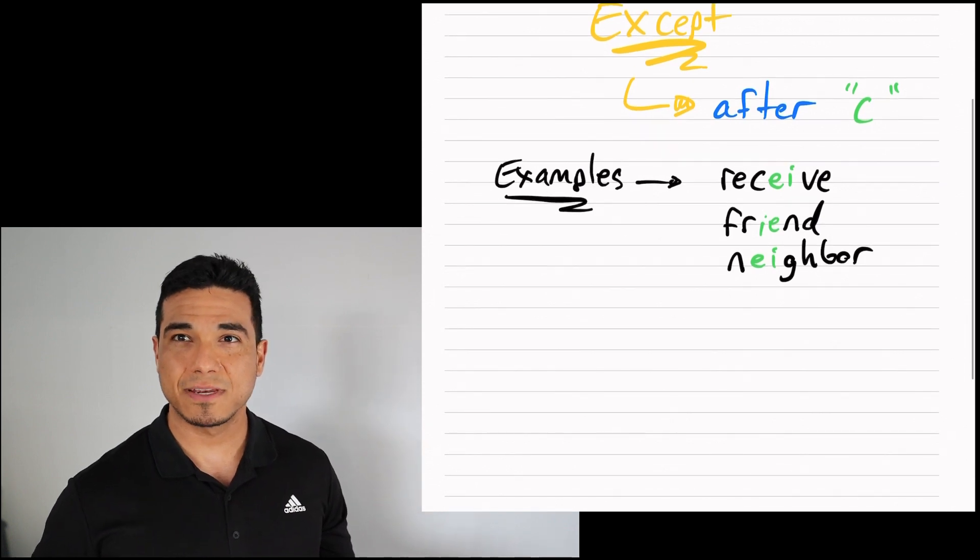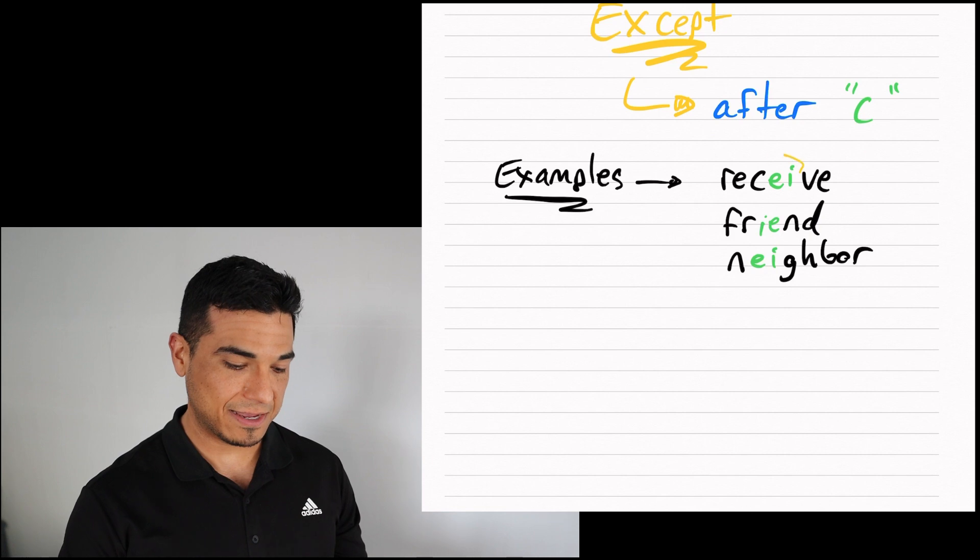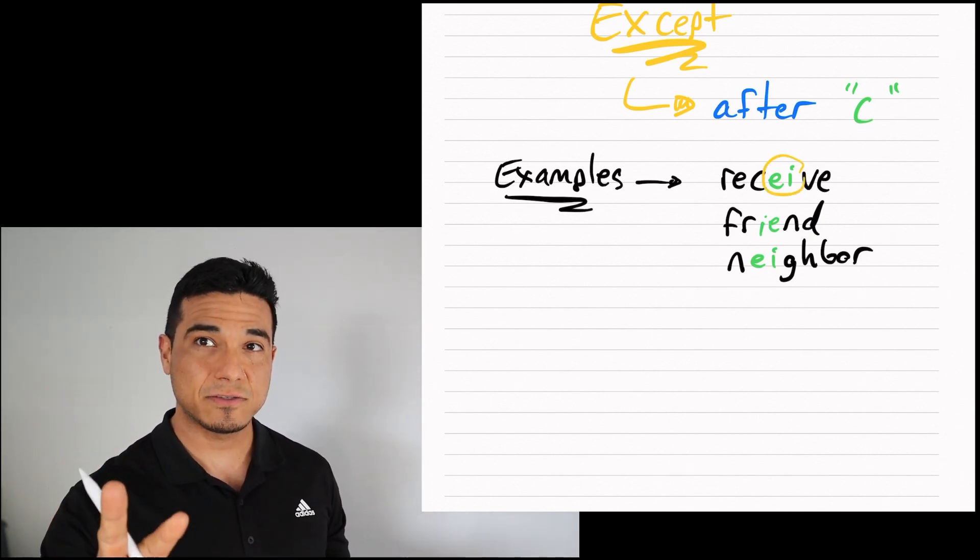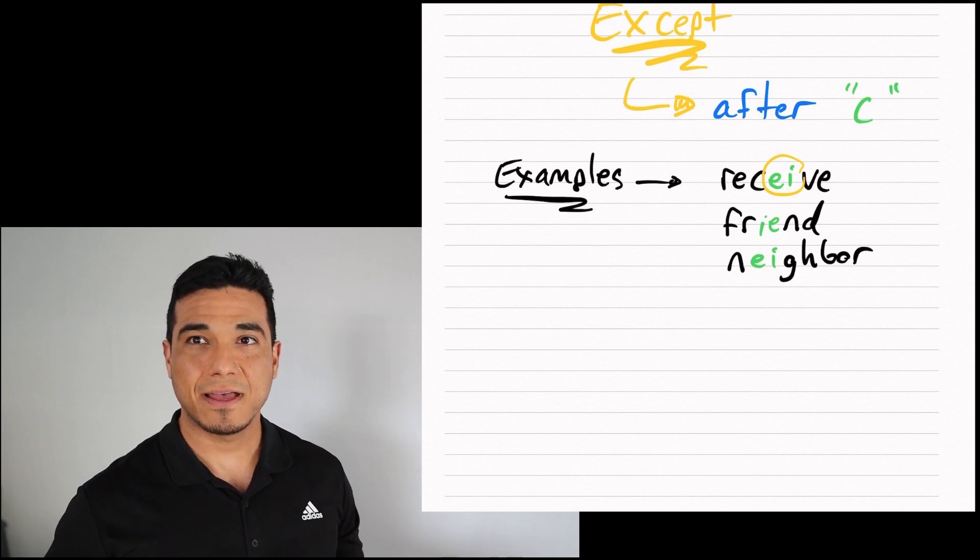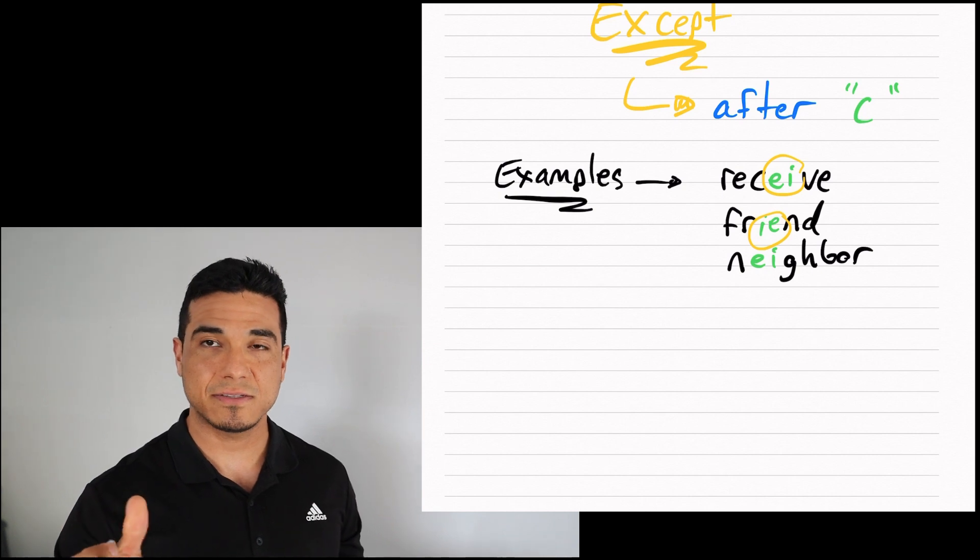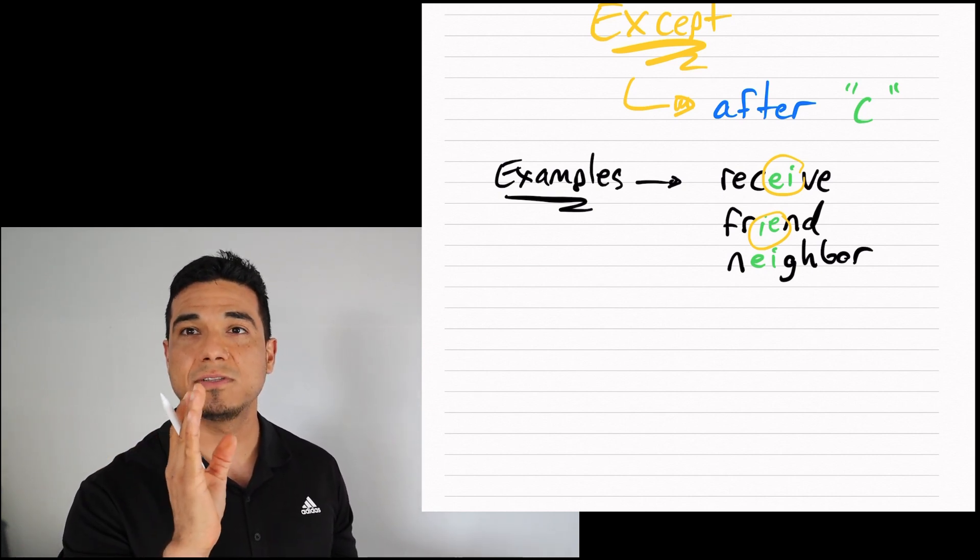Looking at the examples that I give you: receive. You'll notice I have EI because after C, I can't have IE. It has to be EI. Friend. I have IE. Notice how the orientation has changed since it is not preceding the letter C, so it will always be IE.